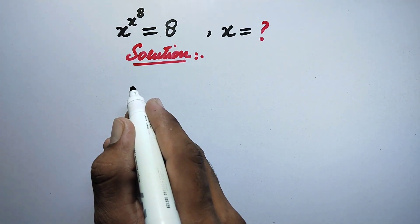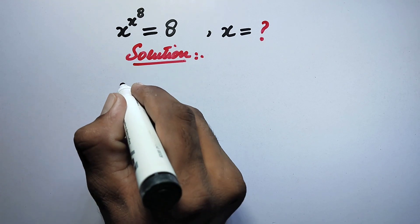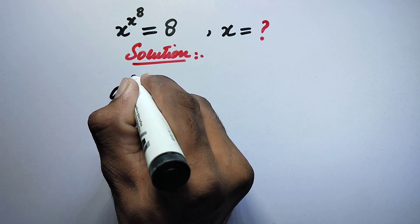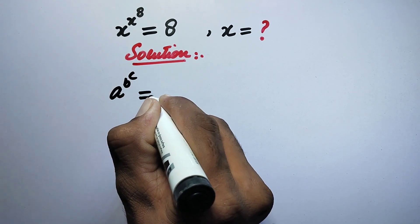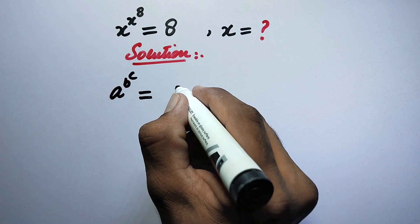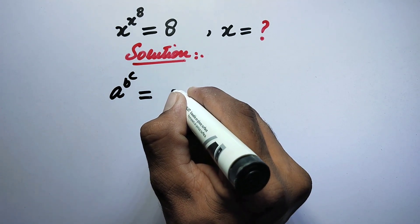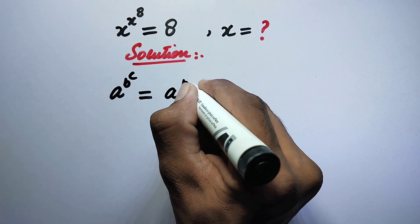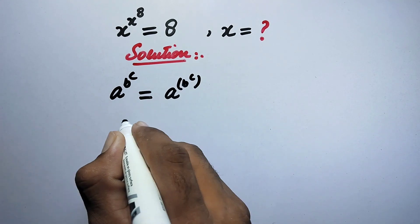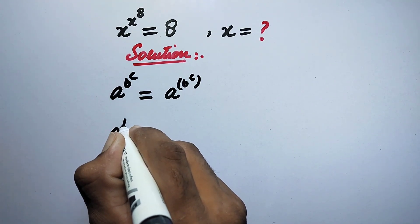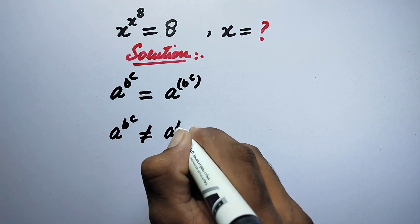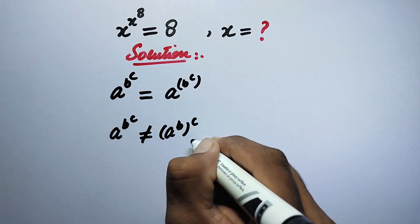First, we will review how to evaluate exponentials like a to the power of b to the power of c. We need to understand in which order these powers are solved. These powers will be solved from the top down — a to the power of (b to the power of c) is NOT the same as (a to the power of b) to the power of c.